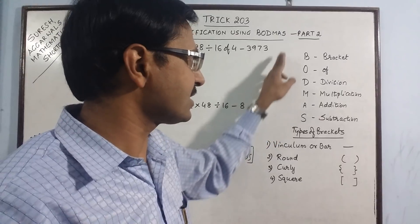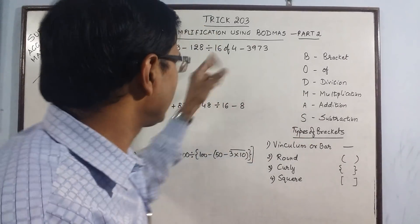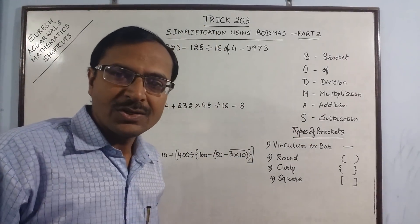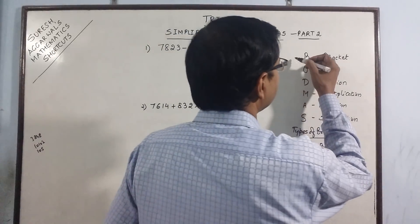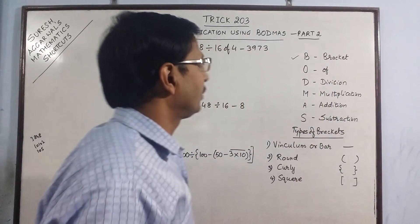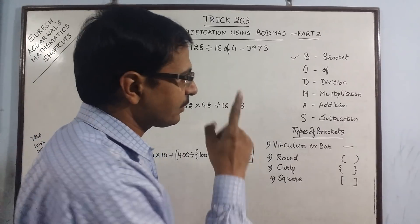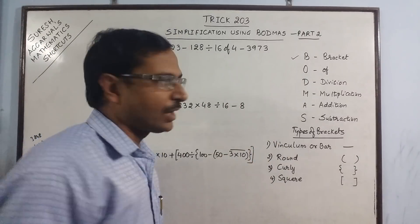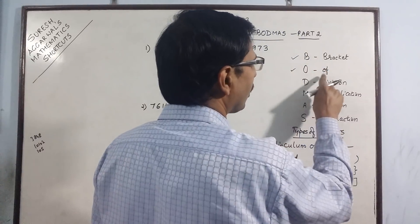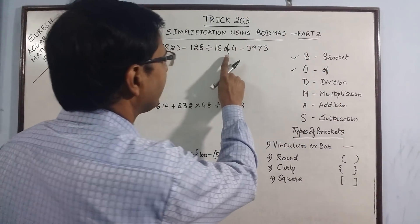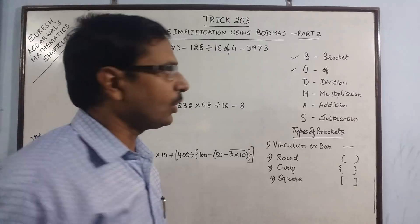Let us solve this problem now. What is the first thing we have? We have bracket. Now we cannot see any bracket here so that step is to be skipped. Now the second thing is to look for 'of'. Here we have one 'of', and 'of' means multiply.